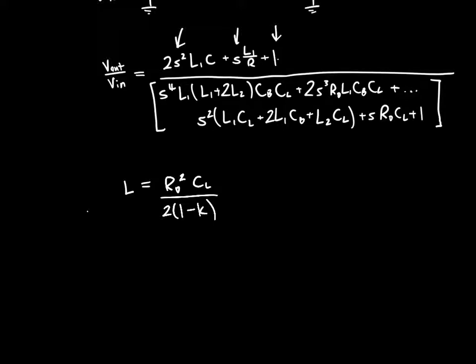We also see that the bridging capacitor Cb must equal Cl over 4 times (1 plus K) over (1 minus K). And these two conditions are our requirements in order for pole zero cancellation to happen. So they give us relationships between the inductance and the capacitance values of the circuit and the magnetic coupling factor.